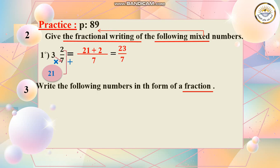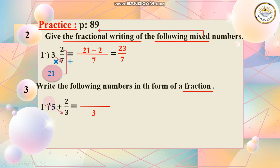Number 3: write the following numbers in the form of a fraction. I have 5 plus 2 over 3. I keep the denominator as 3. Now I multiply 5 by 3 — this is the same as a mixed number, so I calculate it the same way. 5 times 3 is 15, and 15 plus 2 is 17. So the answer is 17 over 3.